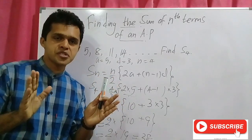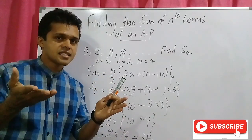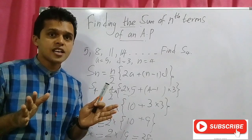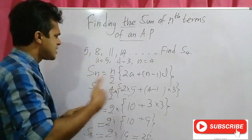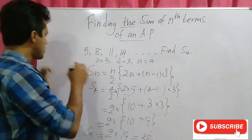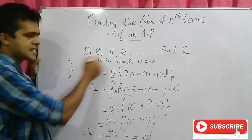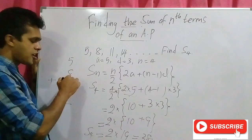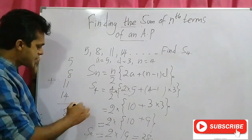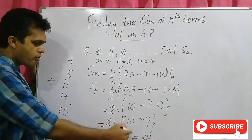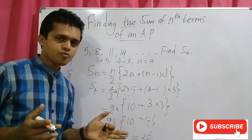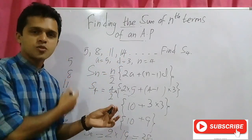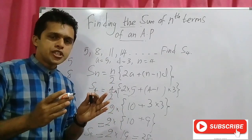The sum of the first four terms should equal 38. Let's verify: the first four terms are 5, 8, 11, and 14. Adding them: 5 plus 8 is 13, plus 11 is 24, plus 14 is 38. This confirms S4 equals 38.